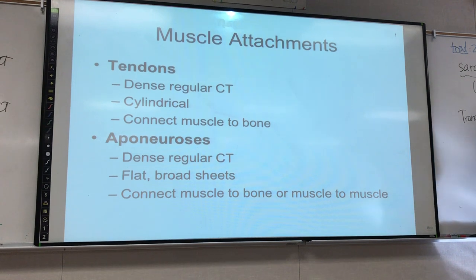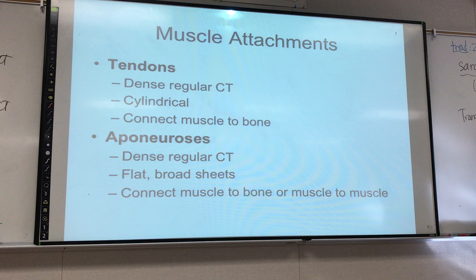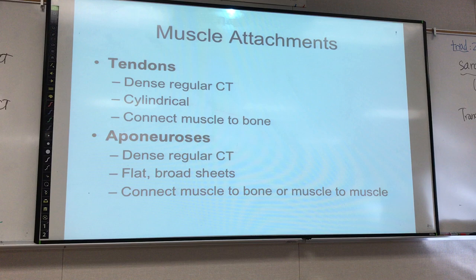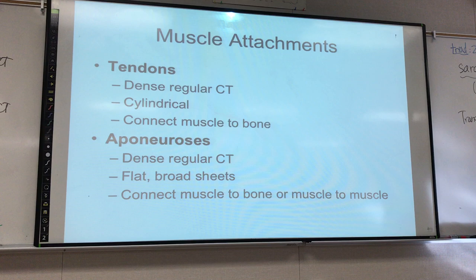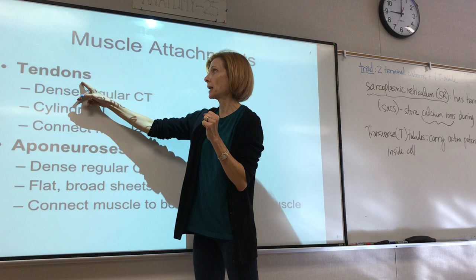Muscle attachments — what is a muscle connected to? Usually muscles attach to bone, most of the time attaching to two different bones. They cross over a joint and attach to two different bones so that when the muscle contracts, the movement occurs at the joint. Usually muscles are connected to the bone by a tendon, which is the most common type of tissue connecting muscle to bone.